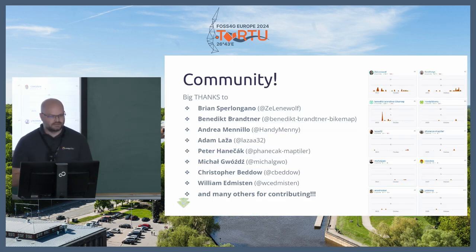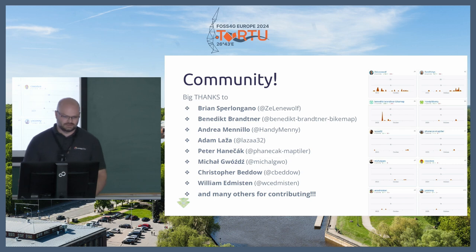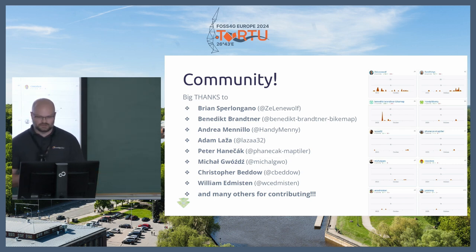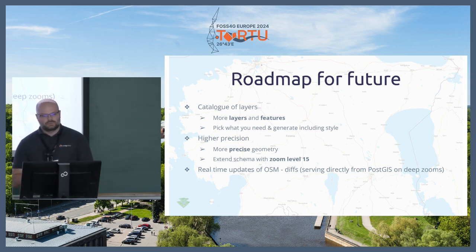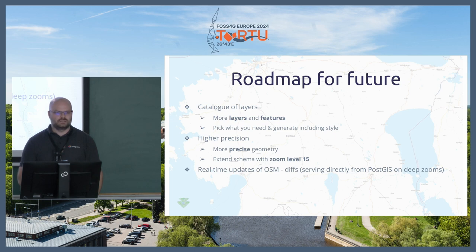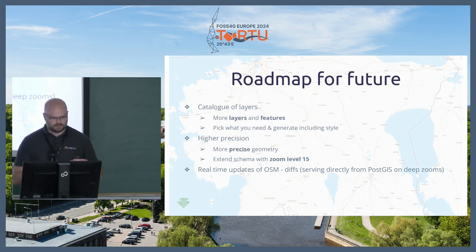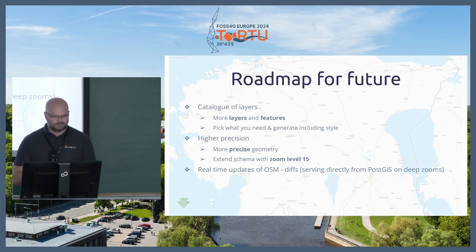Thank you to the community, because without the community the project would not be where it is. Thank you to all contributors and everyone who uses it. Looking to the future, OpenMapTiles should evolve into more of a catalog of features and layers, so you select and generate only what you need. Plans include bringing zoom level 15 with even greater geometry precision and more features like trees and benches. Real-time OSM updates are also a big goal, but still need more work.